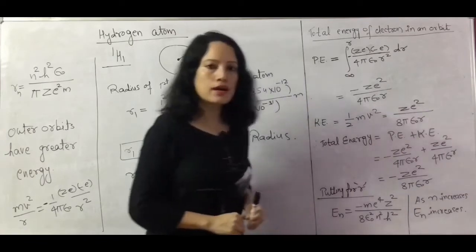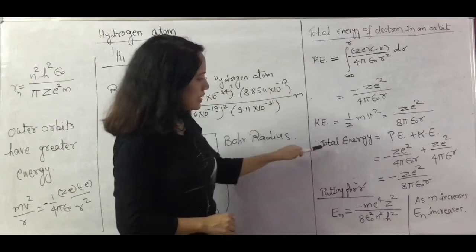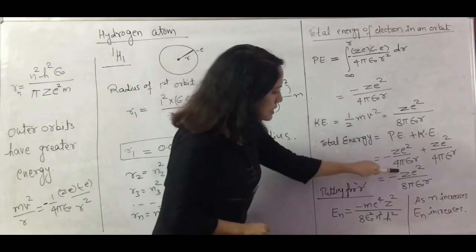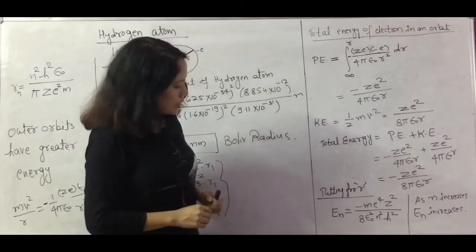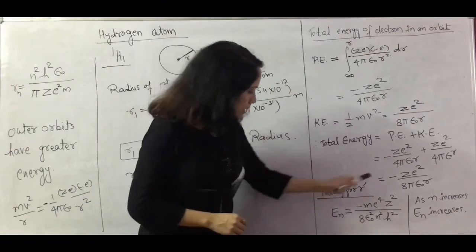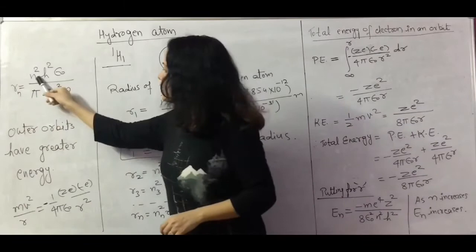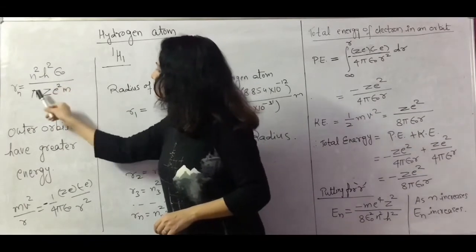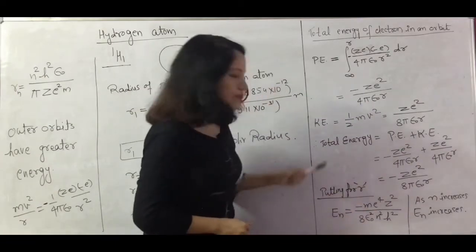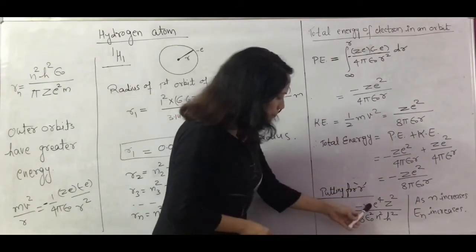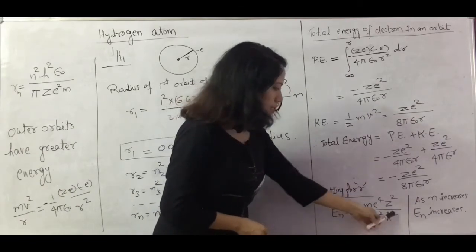The potential energy is equal to −Ze²/(8πε₀r). Upon substituting for r and combining kinetic and potential energy, we get the total energy expression: Eₙ = −me⁴Z² / (8ε₀²n²h²). This is the expression for the total energy of an electron in the nth orbit. The total energy has a negative sign, indicating the electron is bound to the nucleus.